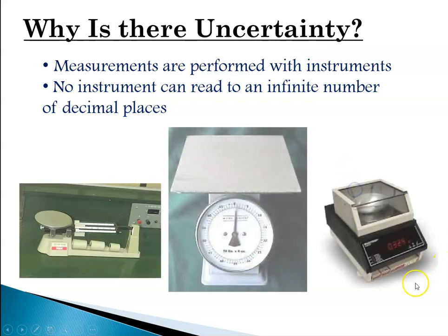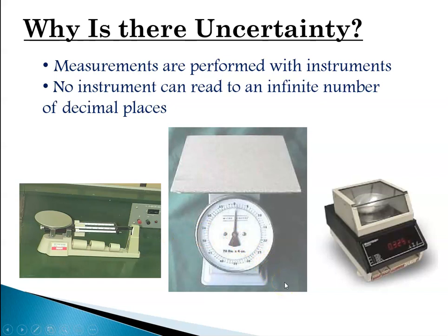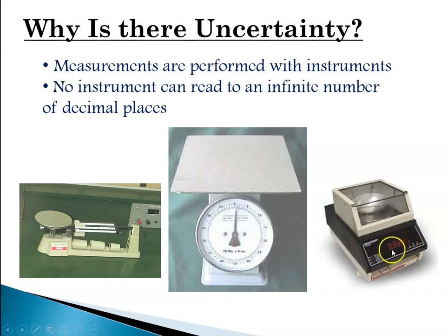Here are three different measurement devices that all measure mass. The first is a triple beam balance, which you may know from junior high — it can usually get to a hundredth of a gram. The second looks like a postal or grocery scale, giving a measurement within about a quarter pound. The third goes to three decimal places — to the thousandth of a gram.